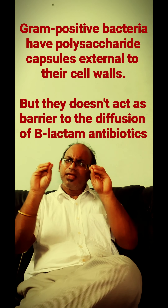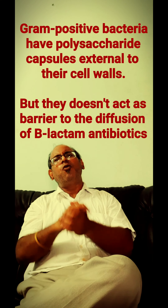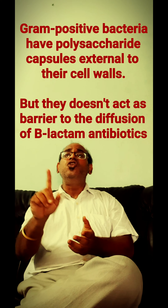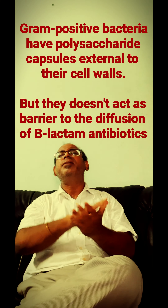The surface structure of gram-negative bacteria is more complex than that of gram-positive bacteria. Though some gram-positive bacteria have polysaccharide capsules external to the cell wall, these structures are not a barrier to the diffusion of beta-lactam antibiotics. The small beta-lactam antibiotics can penetrate easily through it and reach the penicillin binding proteins and inhibit the final stages of peptidoglycan synthesis.